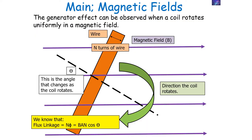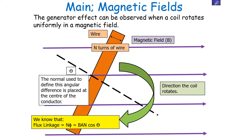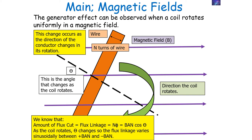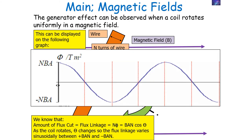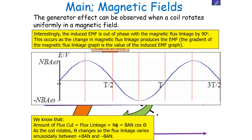When we have a coil rotating, the angle at which it rotates is theta. Flux linkage is N phi equals BAN cos theta, where theta is the angular difference between the conductor and the magnetic field lines. As the coil rotates, theta changes, so flux linkage varies from plus BAN to minus BAN. This change occurs as the direction of the conductor changes, and we can display this graphically going from plus BAN to minus BAN. The induced EMF is 90 degrees out of phase with the magnetic flux linkage, because it is the change in magnetic flux linkage that produces the EMF.